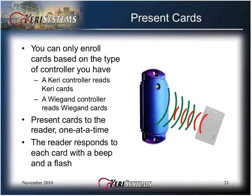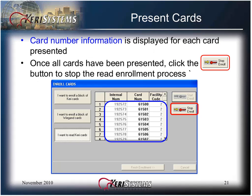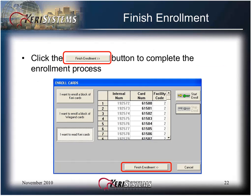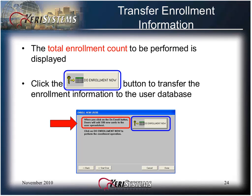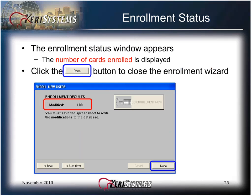Present the cards one at a time through the reader. The reader responds to each card with a beep and a flash of the LED. The card number information is then displayed for each card presented. Once all the cards have been presented, click the Stop Enroll button to stop the Read Enroll process. All the information necessary to perform enrollment has now been collected. Click the Finish Enrollment button to complete the enrollment process. The total enrollment count to be performed is displayed. Verify the total enrollment count — this is your last chance to easily correct any enrollment errors. If the count is correct, click the Do Enrollment Now button. The enrollment status window appears, the number of cards enrolled is displayed, and you click the Done button to close the enrollment wizard.